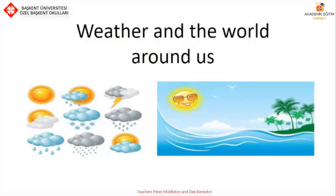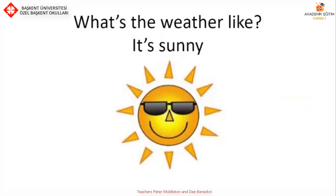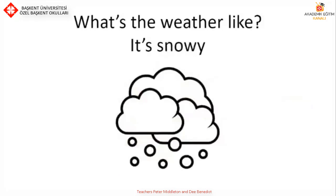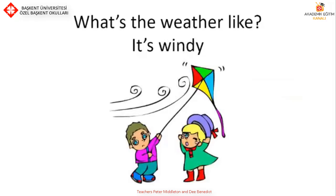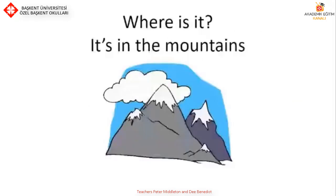Let's start with weather and the world around us — these are our habitats. What's the weather like? It can be rainy, sunny, snowy, windy, stormy, or cloudy.